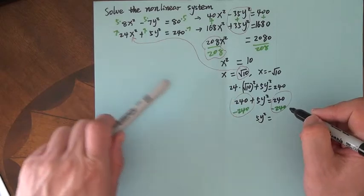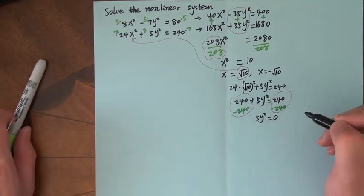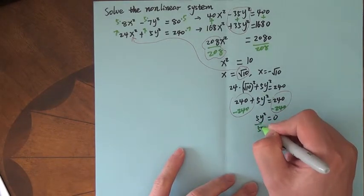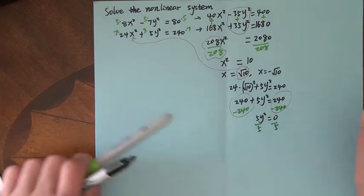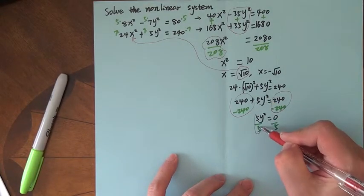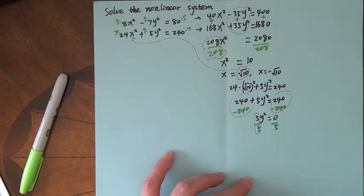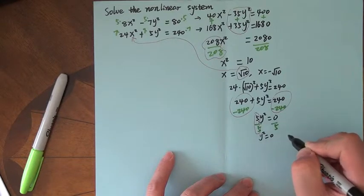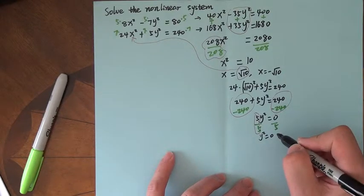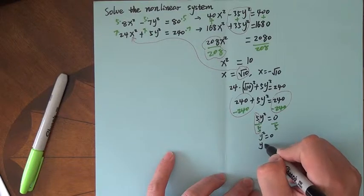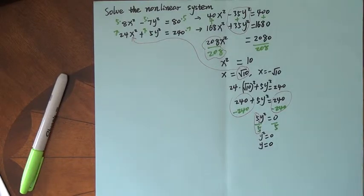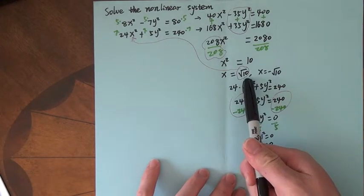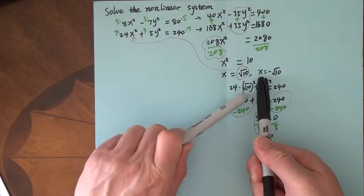We do subtraction on both sides. Then we cancel those two, and we have 5y squared. We may divide by 5 on both sides. Then 5 divided by 5 is 1, and what we get will be y squared is 0. Then y has to be 0. So you may write y is 0. Down here we plug in positive radical 10, so we get that.